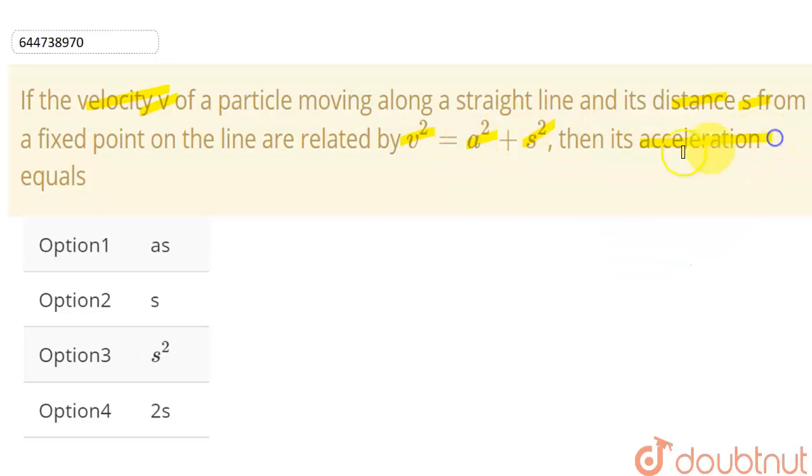And we need to find the acceleration out of these four options. So we have given v² = a² + s², where s is the distance and v is the velocity.